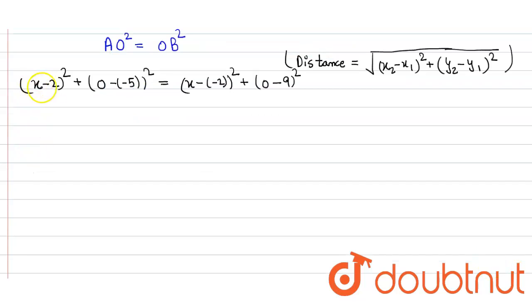Now we simplify it. So (x-2)² will be x² plus 4 minus 4x, plus 5², so 5² will be 25, is equal to (x+2)², and then plus 9², so that will be 81.